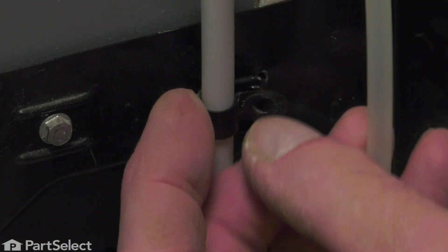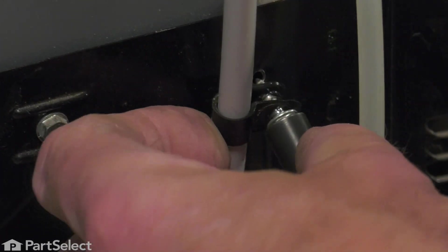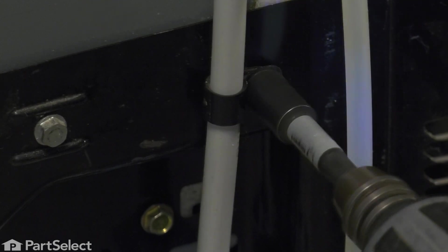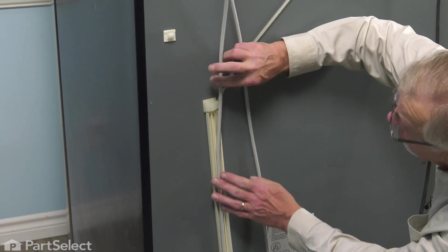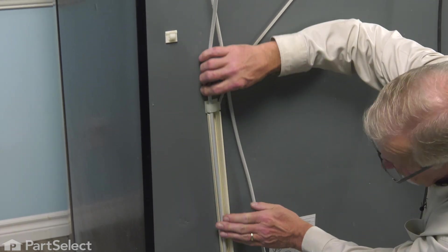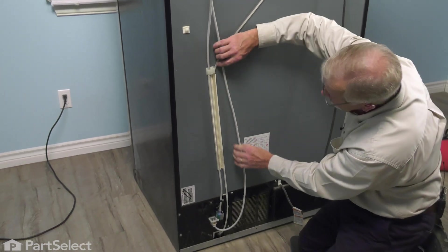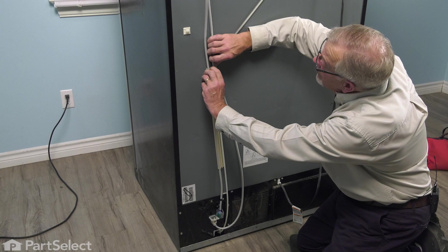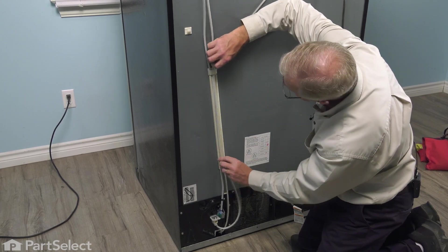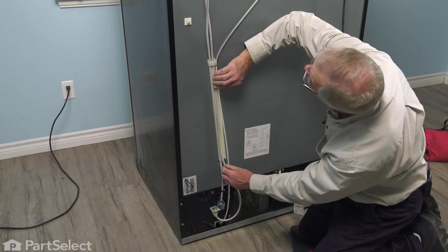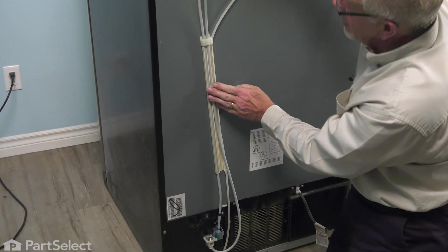We'll reposition that panel and secure it with the screws. We'll reattach that clamp. Now, we'll feed that water line into that channel. Do the same for the input line.